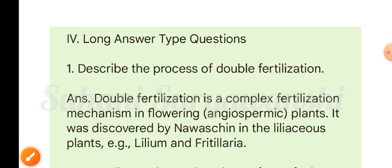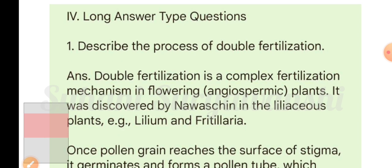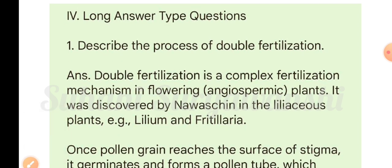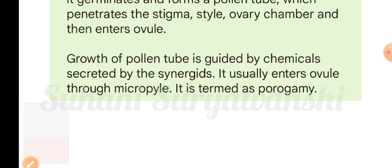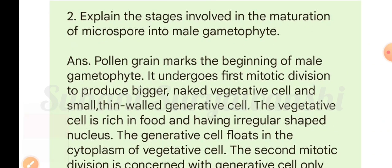Long answer type questions. Question one: describe the process of double fertilization. Double fertilization is a complex fertilization mechanism in angiospermic plants. It was discovered by Nawaschin in lily plants such as Lilium and Fritillaria. Once the pollen grain reaches the surface of the stigma, it germinates and forms a pollen tube which penetrates the stigma, style, ovary chamber, and then enters the ovule. Growth of the pollen tube is guided by chemicals secreted by the synergids; it usually enters the ovule through the micropyle — this is termed as porogamy.